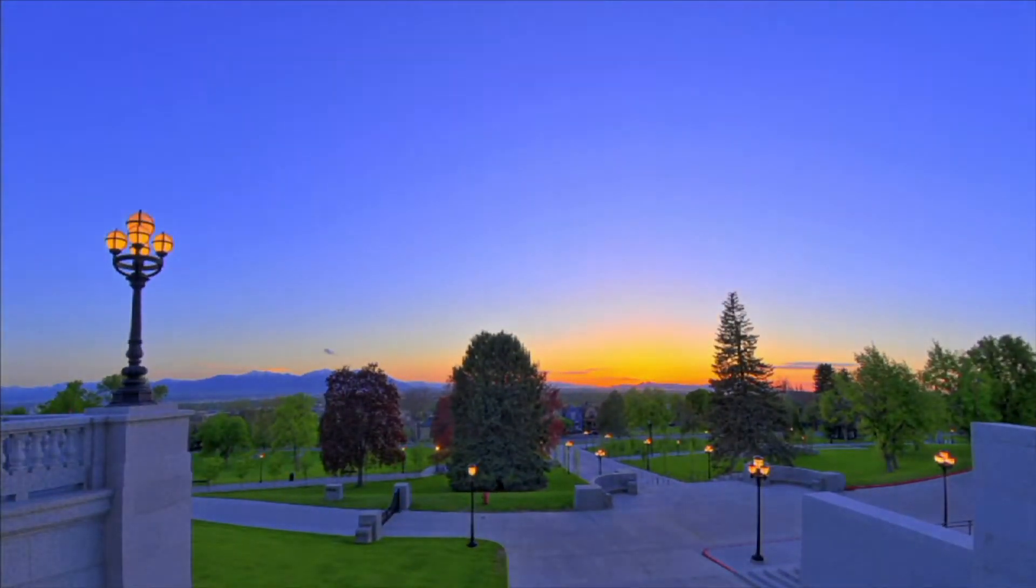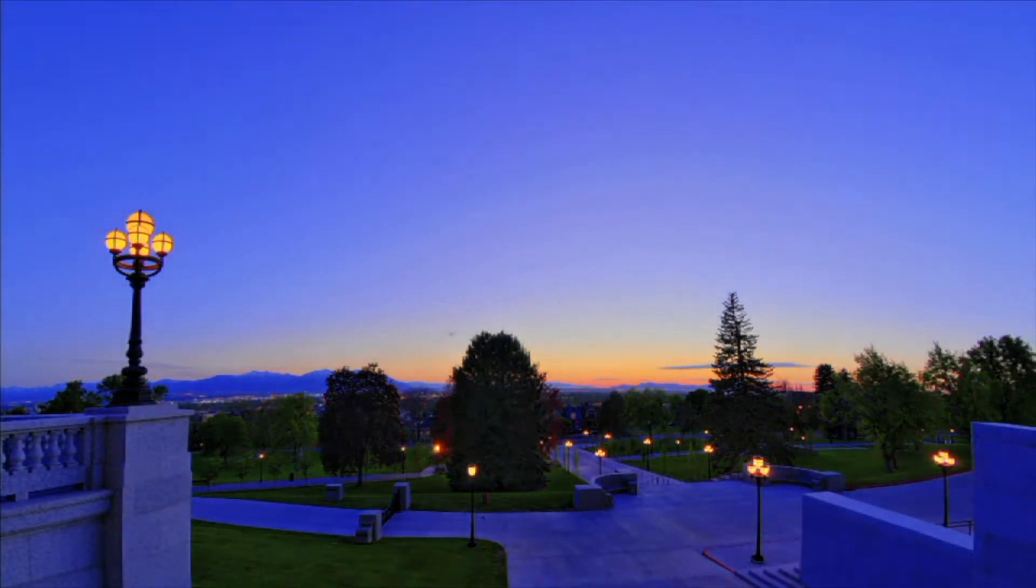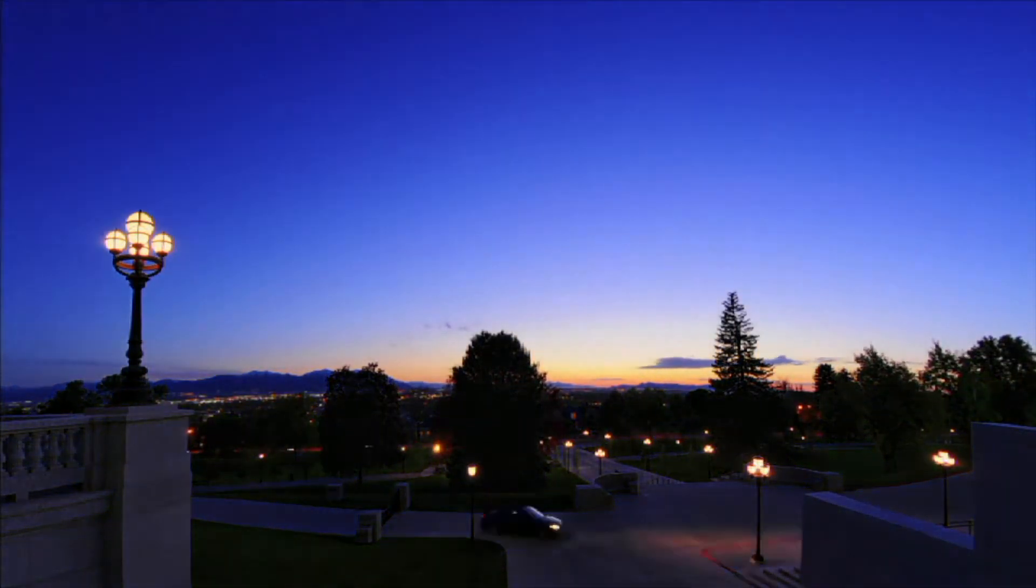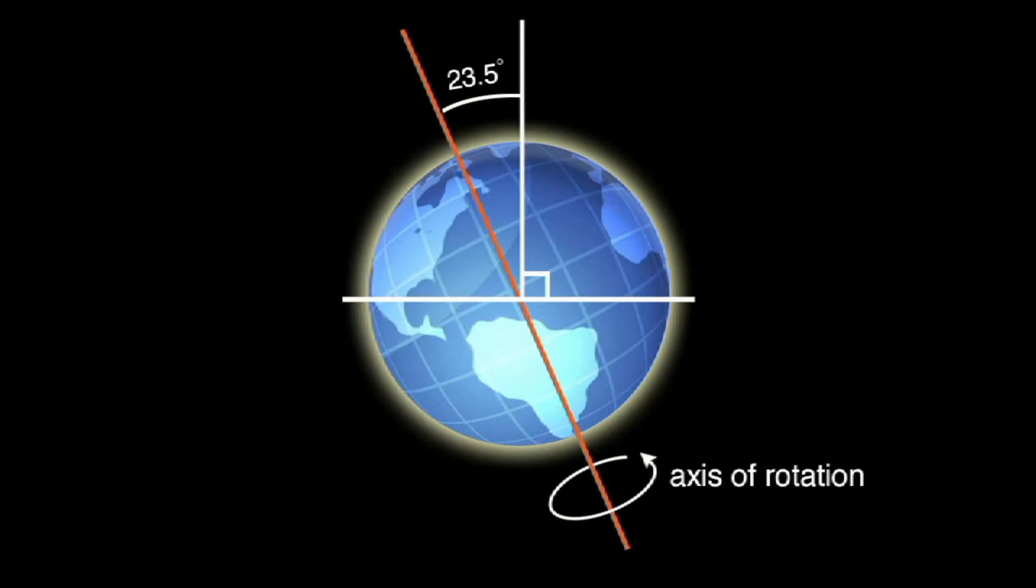Why does the length of daylight change throughout the year? It all depends on Earth's tilt and its journey around the sun. The Earth is tilted about 23.5 degrees, which causes the seasons and the change in the length of days on Earth.